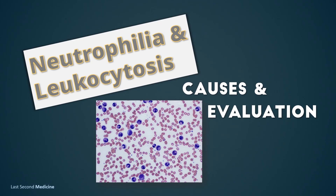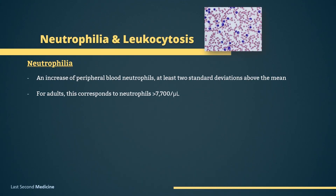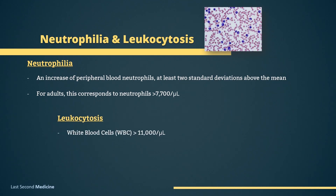In this video, let's talk about leukocytosis, which is raised white blood cells, and neutrophilia, which is raised neutrophil count. Neutrophilia is an increase of peripheral blood neutrophils at least two standard deviations above the mean. In most clinical laboratories, for adults this corresponds to neutrophils greater than 7,700 per microliter. This is typically seen in patients with leukocytosis, which is more than 11,000 white blood cells per microliter.